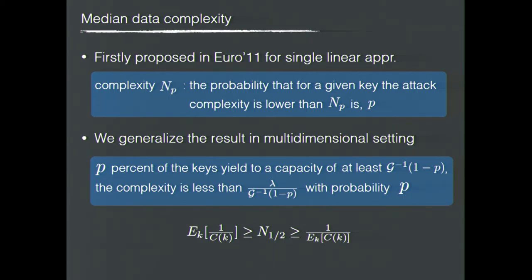We extend the median data complexity result to the multidimensional setting: when P percent of keys generate a capacity of at least a certain amount, the complexity is less than that amount with probability P. Finally, we summarize three measurements for data complexity: the average data complexity is always no smaller than the median complexity, and the median complexity is always no smaller than the inverse of the average capacity, which was commonly used before.